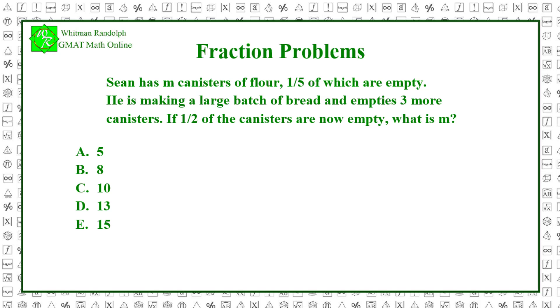Let's find the solution. We'll count the empty canisters as follows. m over five plus three equals m over two. m over five is how many canisters were empty to begin with. Now, in making the batch of bread, he empties three more canisters. So, the total number of empty canisters is m over five plus three. And that number is half the canisters, or m over two.